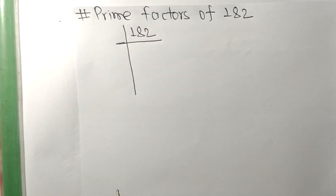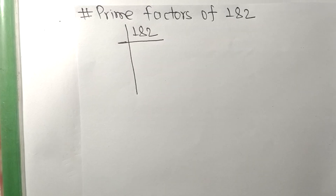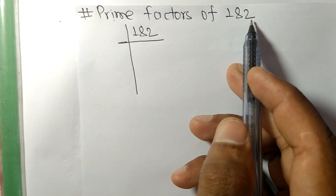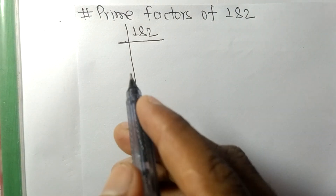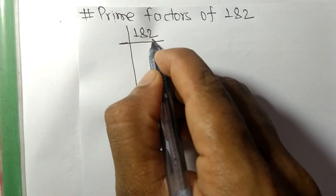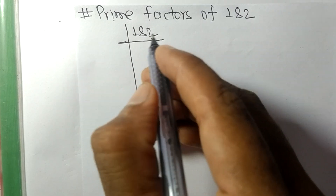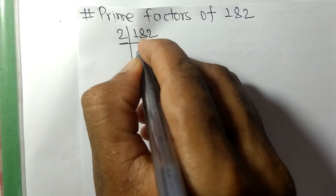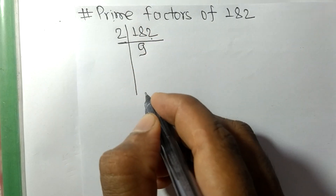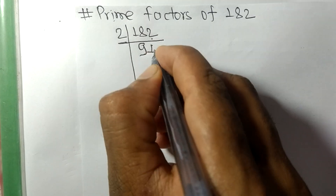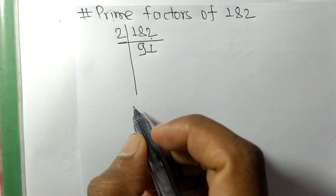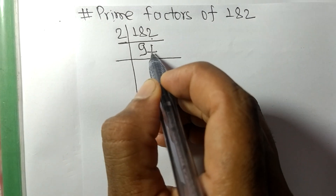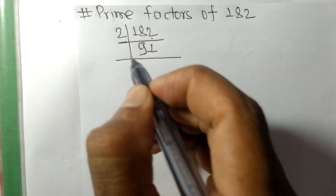Today we shall learn to find the prime factors of 182. Since it contains an even number, this whole number is divisible by 2. So it is 2 times 91 — that is, 2 times 90 is 180 and 2 times 1 is 2 — giving us 91, which is a prime number, divisible only by 91 itself.